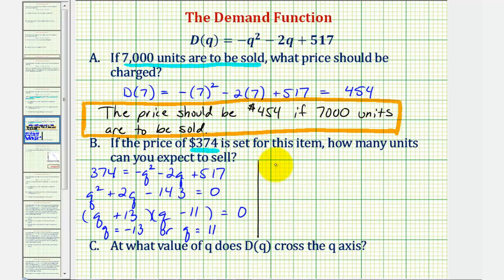Which means you can expect to sell 11,000 units if the price is $374.